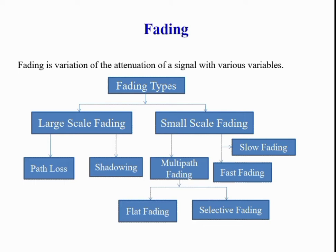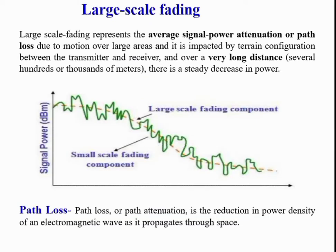Fading is broadly classified into large scale fading and small scale fading. Large scale fading is further classified into path loss and shadowing. Small scale fading is broadly classified into three parts: multipath fading, fast fading, and slow fading. Multipath fading is further classified into flat fading and frequency selective fading.